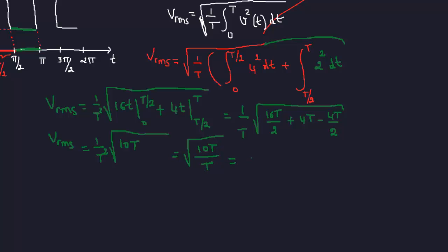So the final answer is square root of 10. So v_rms is equal to the square root of 10, and that's 3 something, 3.16.